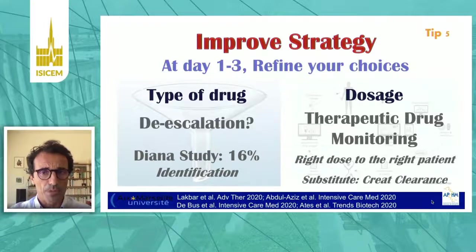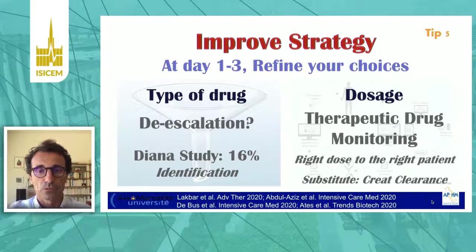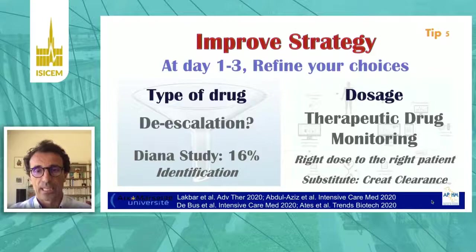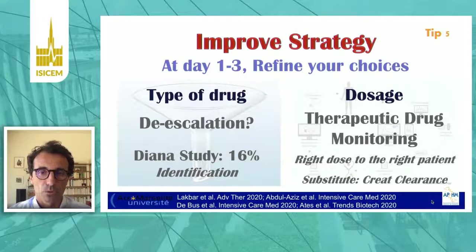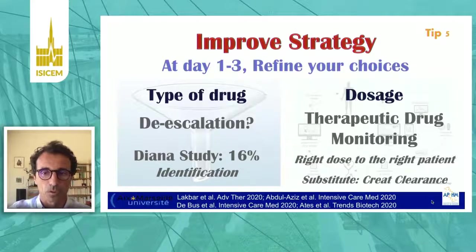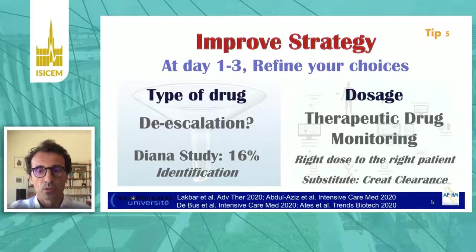We have to provide the best dose for your patient. We have to use therapeutic drug monitoring in all patients each time we can, and adapt the dose to the MIC of the bacteria. We have to give the right dose to the right patient for the right bacteria. If you don't have therapeutic drug monitoring, you can use a substitute, which is creatinine clearance. If creatinine clearance is high, you have to increase the dose of antibiotics; if it is low, you have to decrease the dose. That's tip five.